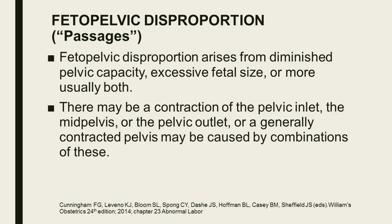Turning to the second P — passages — fetopelvic disproportion arises from diminished pelvic capacity, excessive fetal size, or usually both. There may be a contraction of the pelvic inlet, the mid-pelvis, or the pelvic outlet, or a generally contracted pelvis caused by combinations of these.